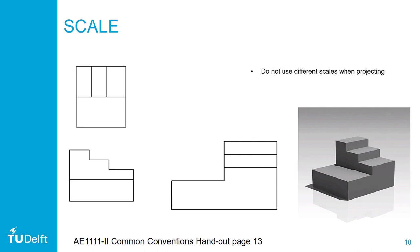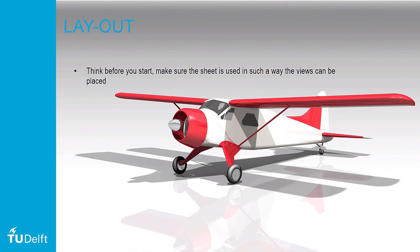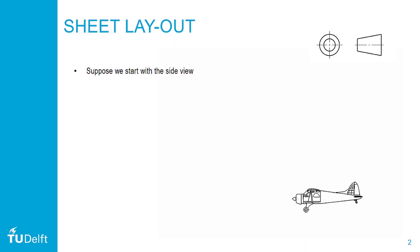Something which is visible from the top and side and front should be present in each view. For the same reason, it's important to use the same scale when you project your views. Please think before you start drawing your first view — make sure that you use the sheet in such a way that all the views can be placed.